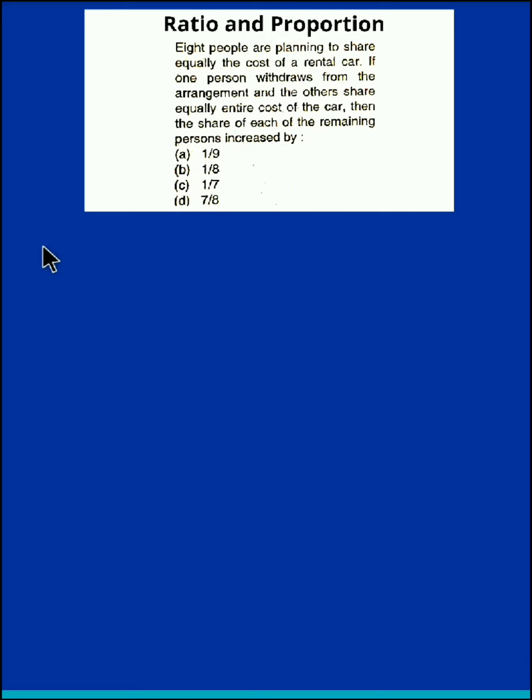Suppose we assume the car rent as x. So we say, let the car rent be x. Now initially, it was supposed to be shared by eight persons equally.